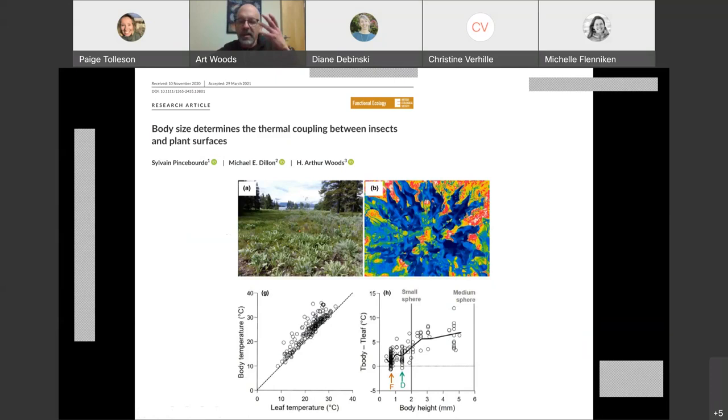It turns out that we can explain much of the variation in those excursions by using the body size of the insects, so how far away they project from the leaf surface. If they barely project at all, then there's almost no difference between their body temperature and leaf temperature. But once they get above about two or three millimeters in height, then their body temperatures can be really significantly higher than the leaf temperature by five or six or sometimes up to more than 10 degrees. The coupling between the insects and their surface temperatures depends on size, and the smaller they are the stronger that coupling is.